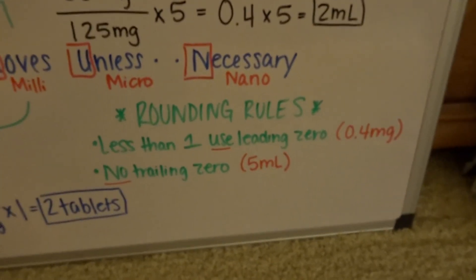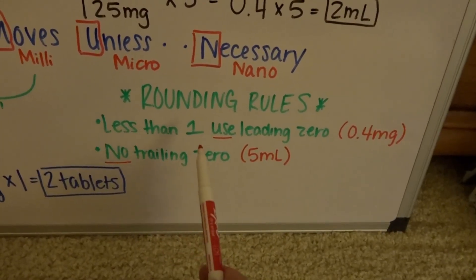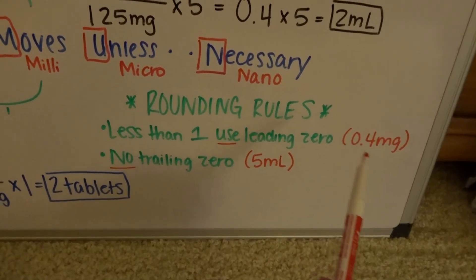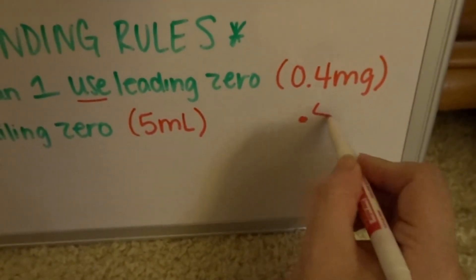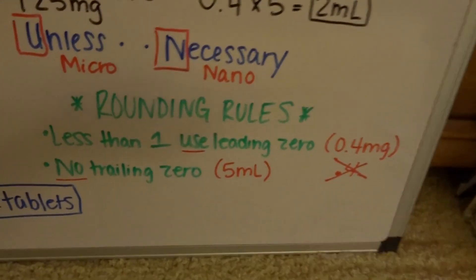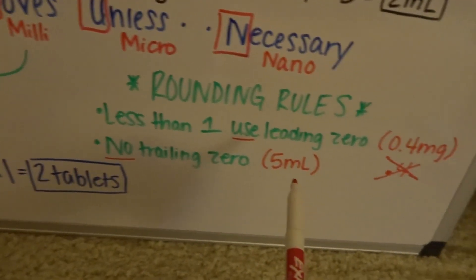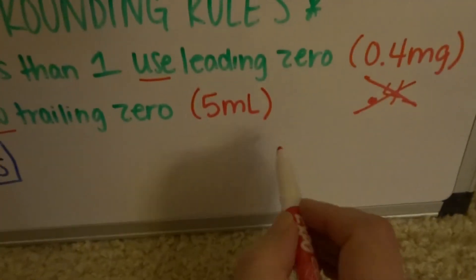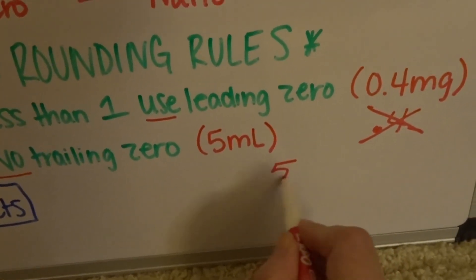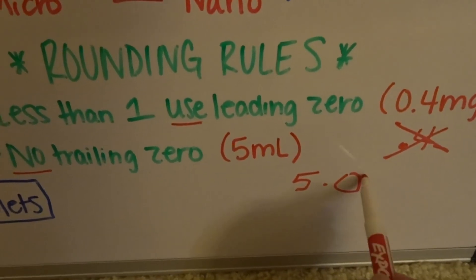The last thing to keep in mind when doing desired-over-have problems is rounding rules. If the answer is less than 1, use a leading zero — you must write 0.4, not just .4, because .4 can be misread as 4. Another thing: no trailing zeros. So if you have a whole number like 5, do not write 5.0 — that's a trailing zero and they don't want that.